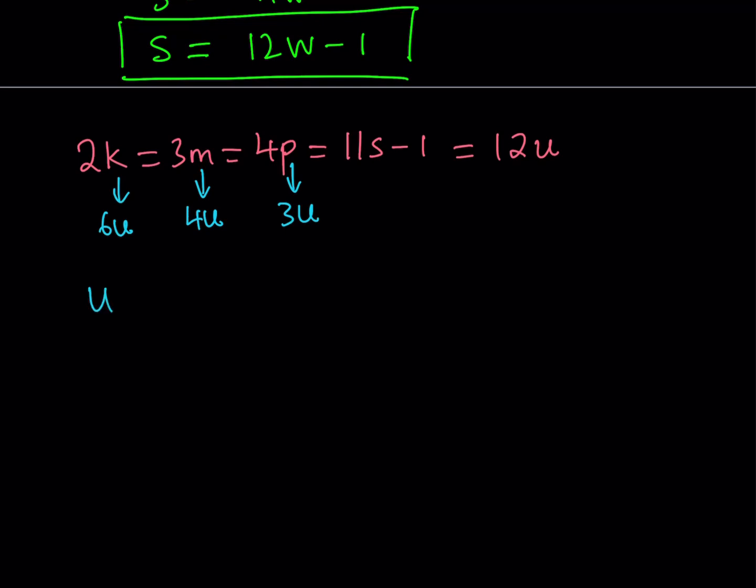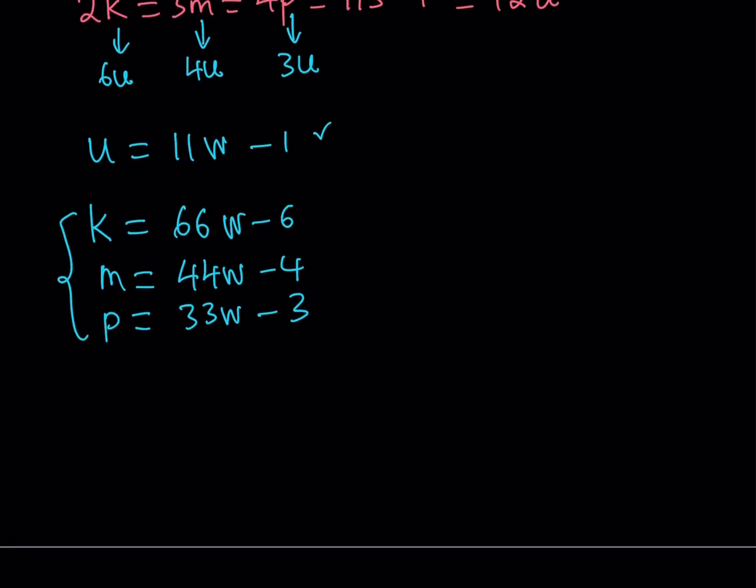So, if you get rid of the s and just use the u as an example. This tells you something nice. If 2k is equal to 12u, then k can be written as 6u. And m can be written as 4u. And p can be written as 3u. You see, that's the beauty of going off of the least common multiple, because we can now express everything in terms of a single variable again. So, now, I was able to write k in terms of u, m in terms of u, and p in terms of u. What is that supposed to mean? Well, if you remember, u is equal to 11w minus 1. So, from here, I can basically express k, m, and p in terms of w, which is going to bring us closer to x, y, z. Let's go ahead and do that. k can be written as 6u. So, if you multiply u here by 6, you get 66w minus 6. m is equal to 4u, which is 44w minus 4. And p is equal to 3u, which is 33w minus 3.